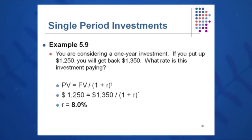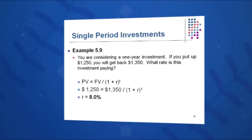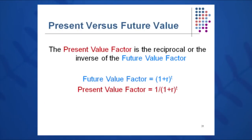Here's a very simple example. You put up $1,250 today and get back $1,350. What is the rate this investment is paying? PV equals FV over 1 plus R to the T — this time solving for R. So 1,250 equals 1,350 over 1 plus R to the first power. When time equals one year, this simplifies to just dividing the two numbers: 1,350 divided by 1,250, minus 1, giving a rate of 8%. The present value factor is simply the reciprocal of the future value factor — you just plug the three variables into the equation and solve.